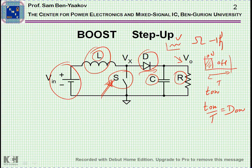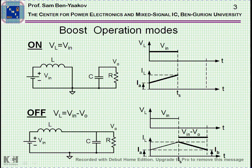Let's have a closer look at the modes of operation, which are shown here. It is divided through the on time and off time, with respect to the switch. When the switch is conducting, we call it the on time. When the switch is non-conducting, we call it the off time.